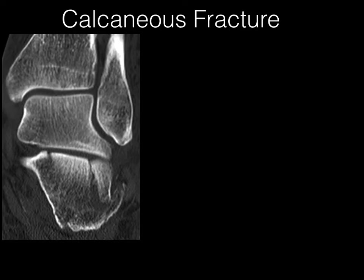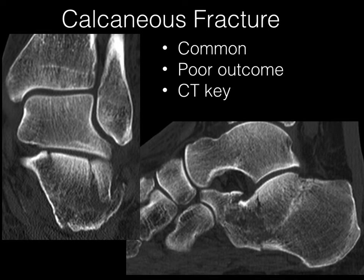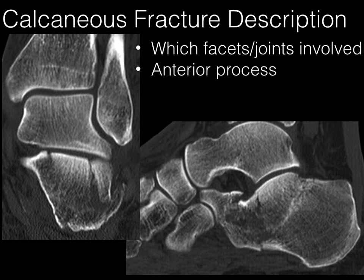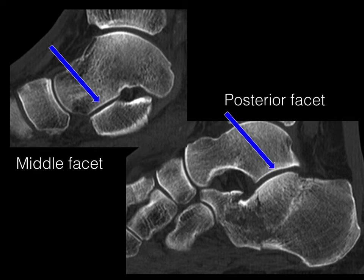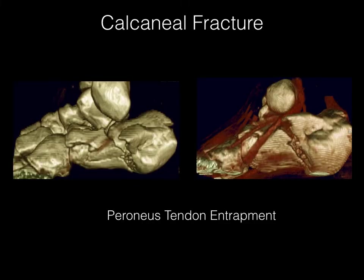Calcaneal fractures are common fractures seen on CT. They can have a poor outcome and CT is very important for description. When describing a calcaneal fracture on CT, we want to identify which facets or joints are involved, whether the anterior process of the calcaneus is involved, and whether there's soft tissue entrapment. The middle facet and posterior facet are key anatomy. Here's an example of a 3D CT image showing peroneal nerve entrapment from a calcaneal fracture.